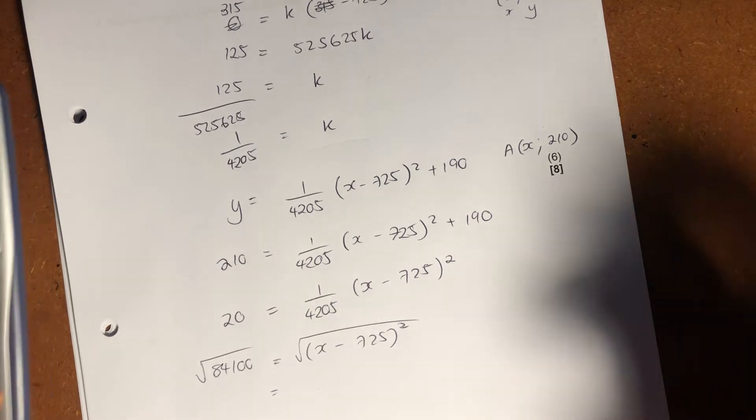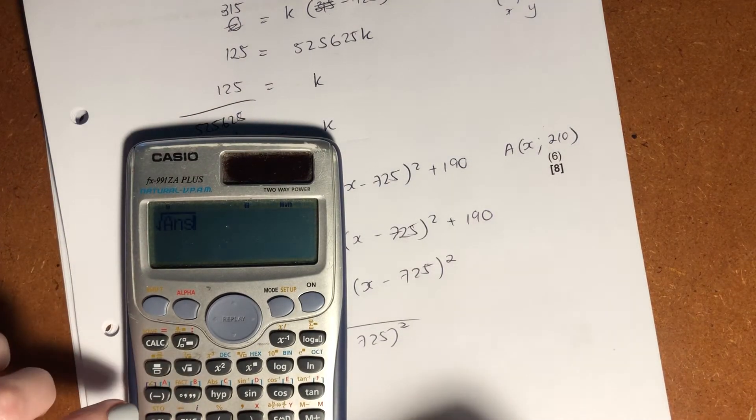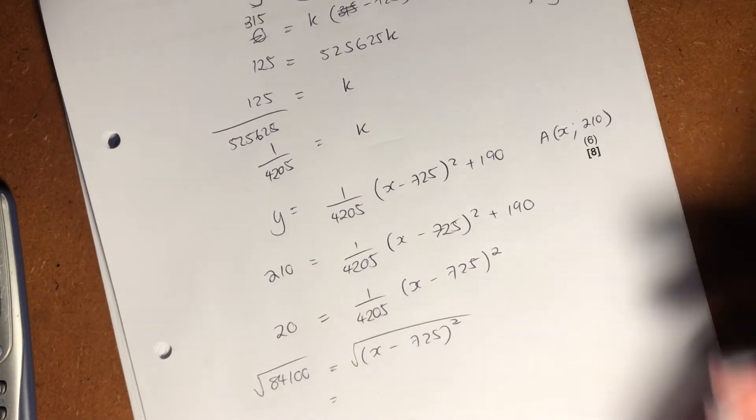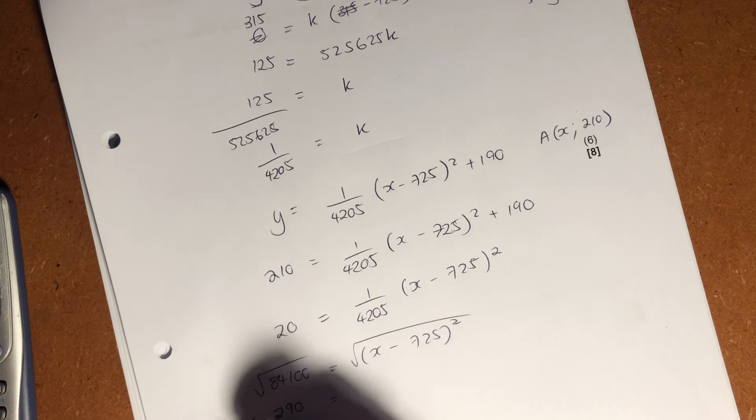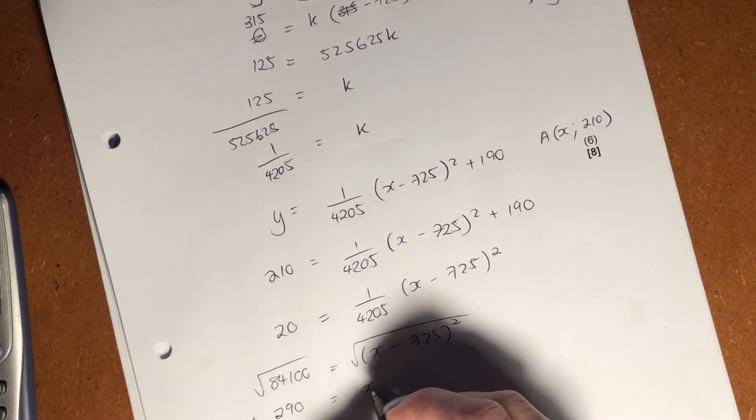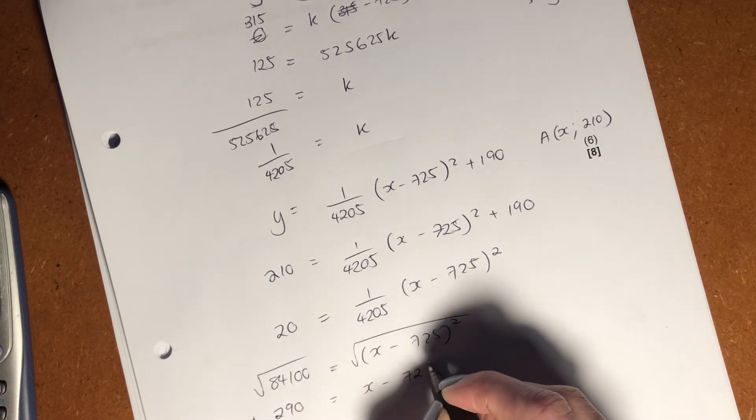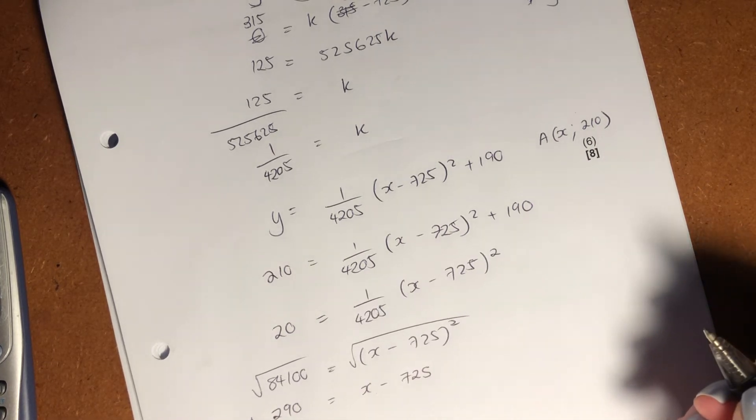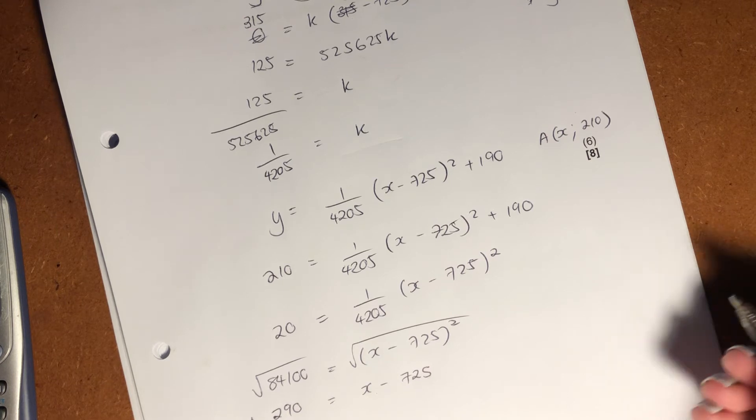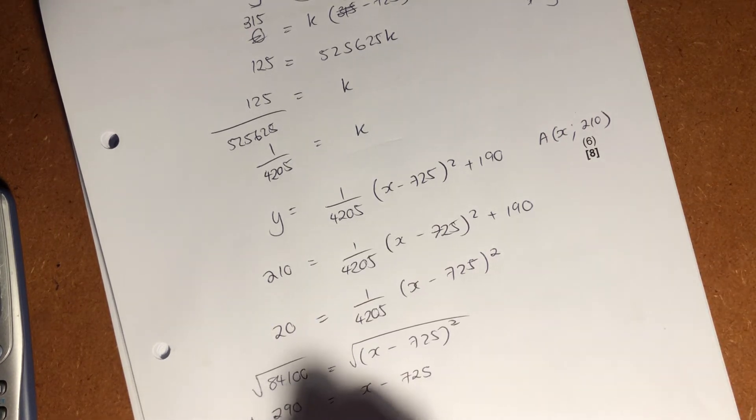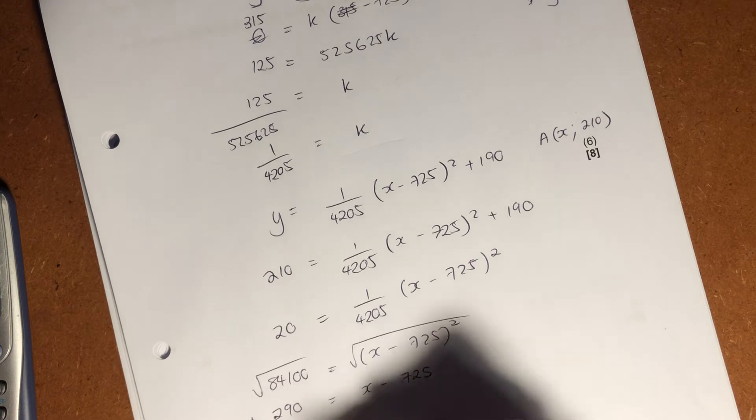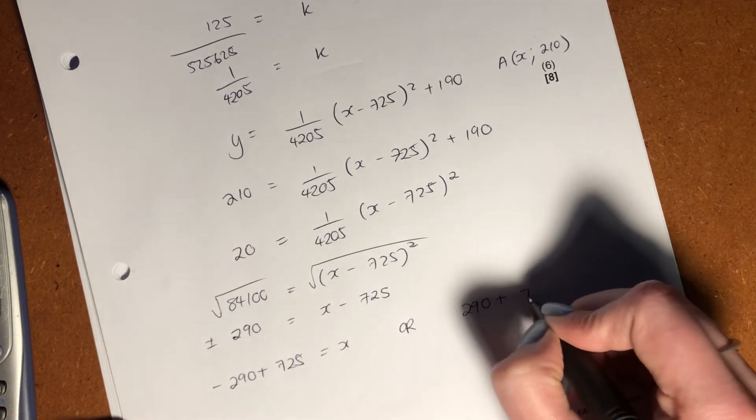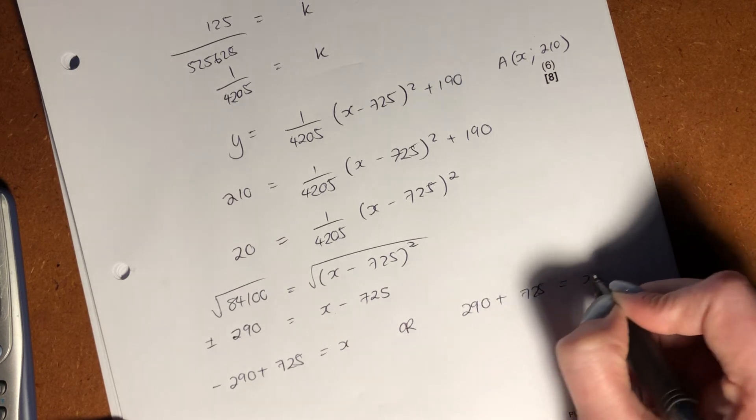Please remember, when you root, you're going to get a plus or minus, so I'm going to root, put that in, and it gives me 290, but it's not just 290. It has to be 290 plus minus, and then we get x minus 725. So, then what we would have is we would then go and add that on, so we have negative 290 plus 725. That's my 1x, or we have 290 plus 725, equals x.